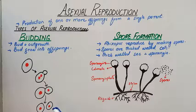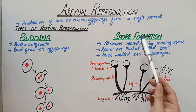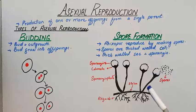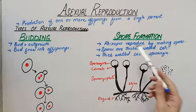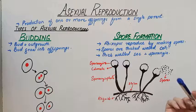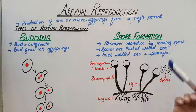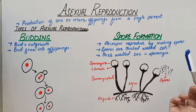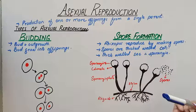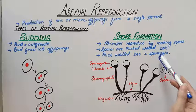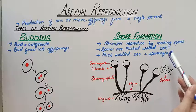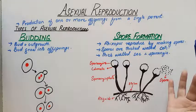This is bud formation in asexual reproduction. The next type is spore formation. Many fungi, like bread mold, reproduce by making spores. Spores are thick-walled cells reproduced asexually. They are present in a thick-walled sac known as sporangia, which are borne on erect branches of the mold.